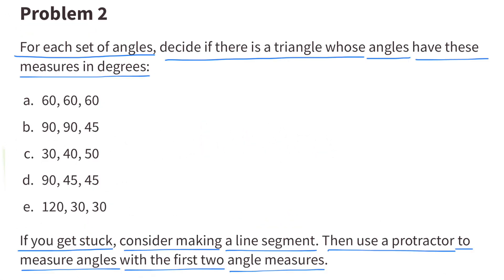Number 2. For each set of angles, decide if there is a triangle whose angles have these measures in degrees. If you get stuck, consider making a line segment, then use a protractor to measure angles with the first two angle measures.